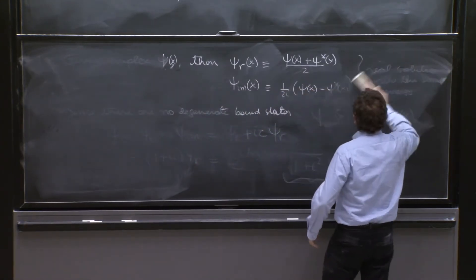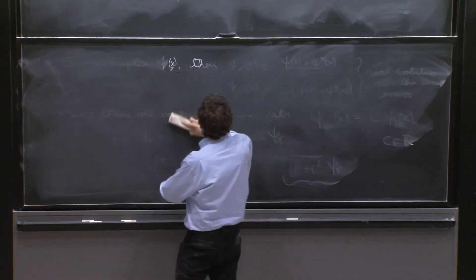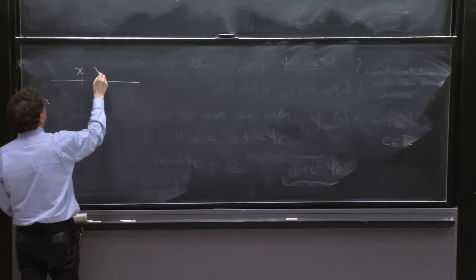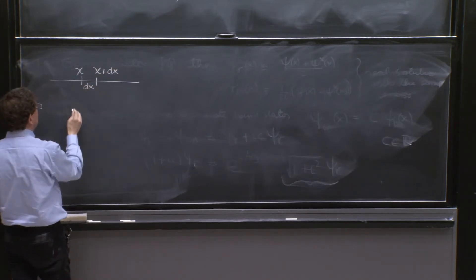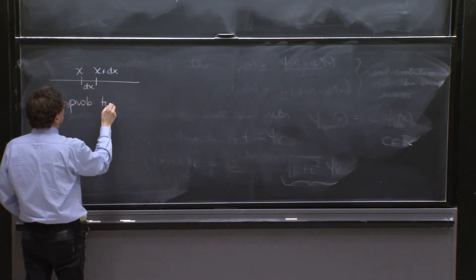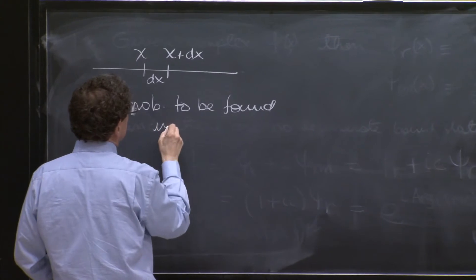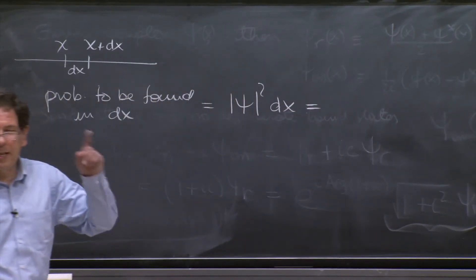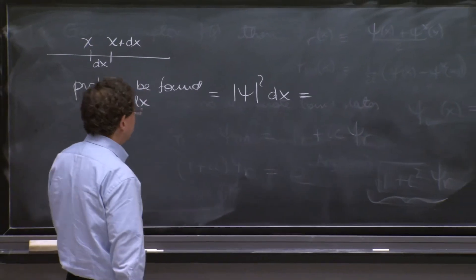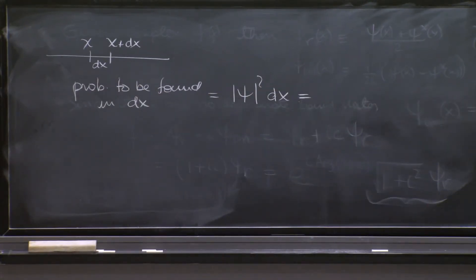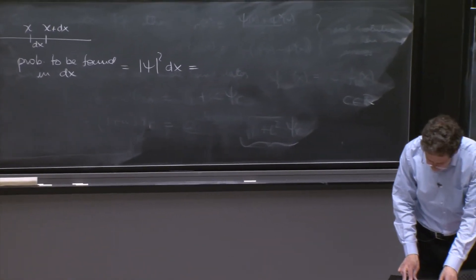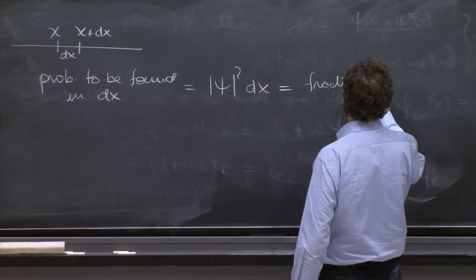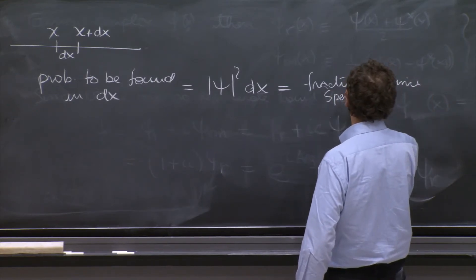Let me explain this a little more to get the key point. If you have a potential and you look at the interval from x to x plus dx, the probability to be found in dx is equal to psi squared times dx, and it's proportional to the fraction of time spent there.